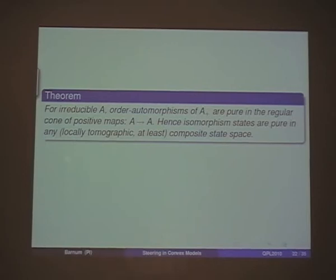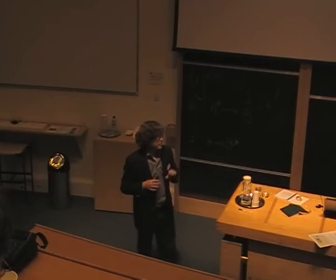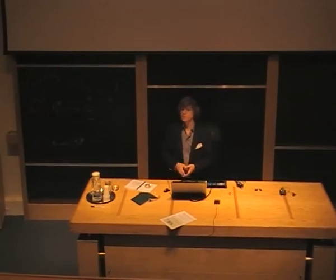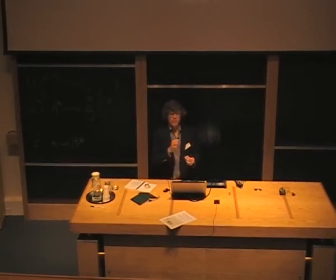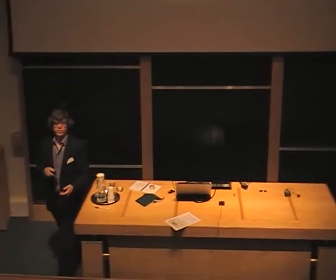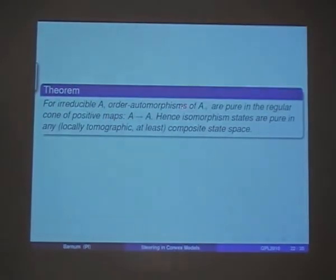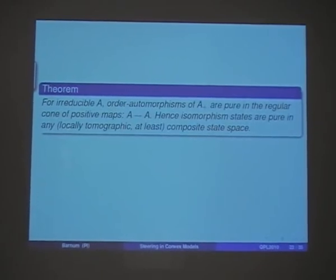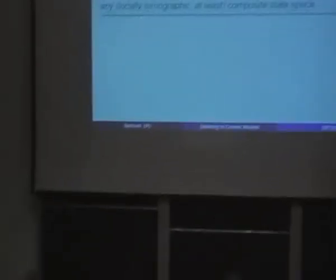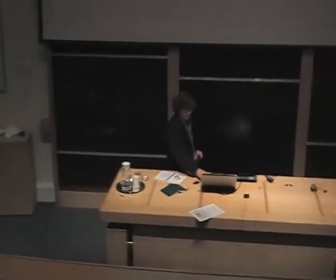Although we know isomorphism states imply steering, it would be nice to have a converse. If we just require steering in one direction, we definitely don't have a converse — in general we won't have all steering states be isomorphism states, because their marginals need not be in the interior. But we can at least say something like: steering states are pure, or at least know when they might be. One thing that Alex and I showed — though it's probably folklore — is that order automorphisms of a cone are pure maps among the positive maps from the cone to itself. That means isomorphism states are going to be pure in any composite state space, at least if it's locally tomographic.